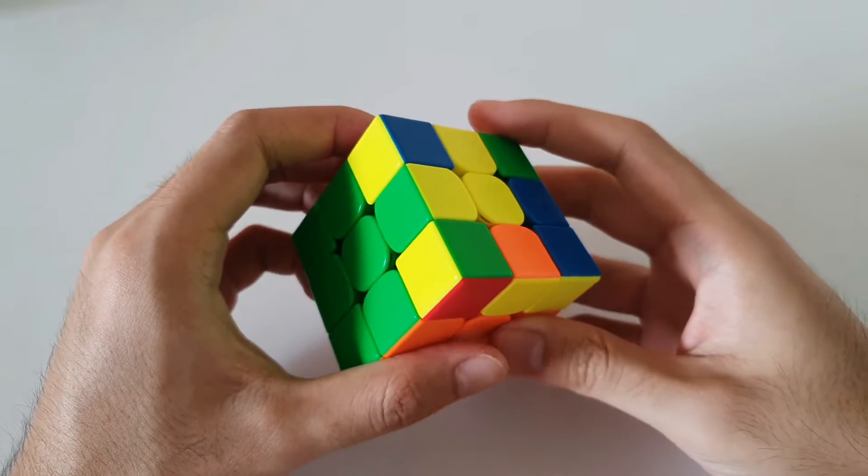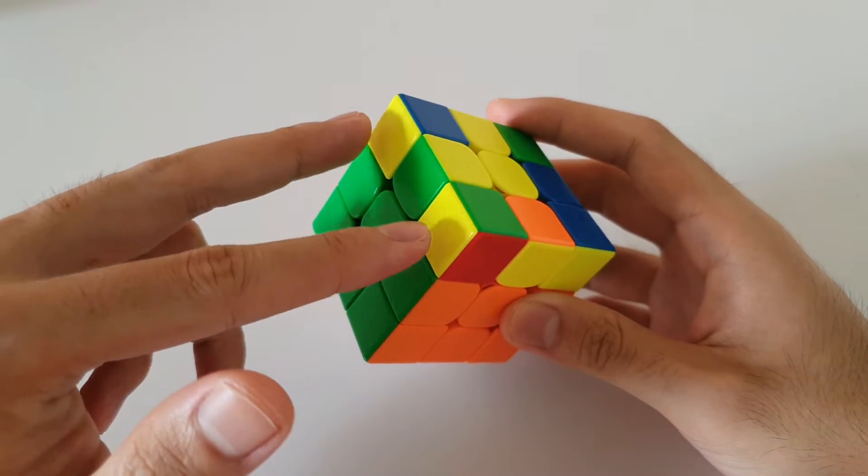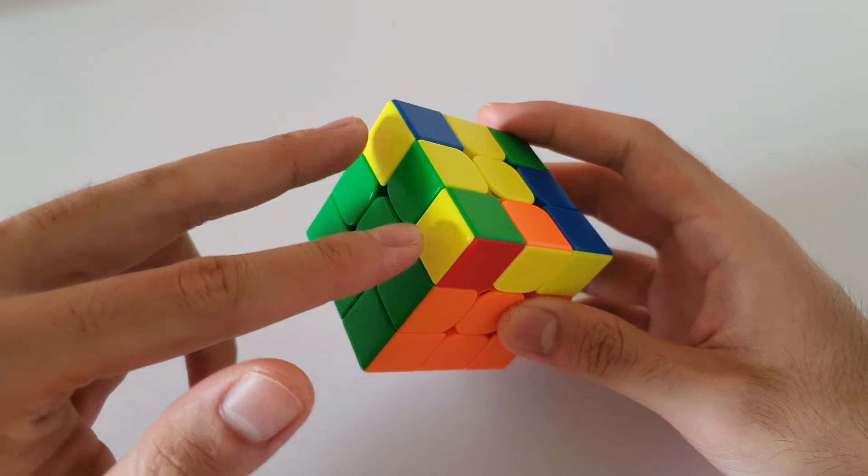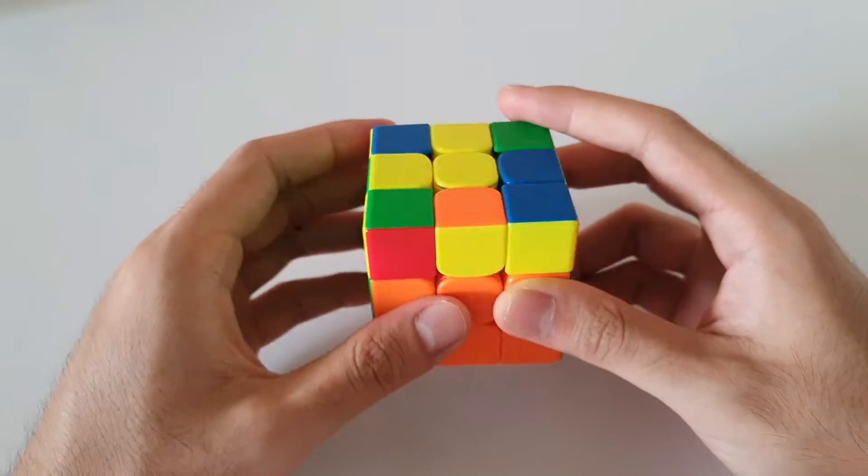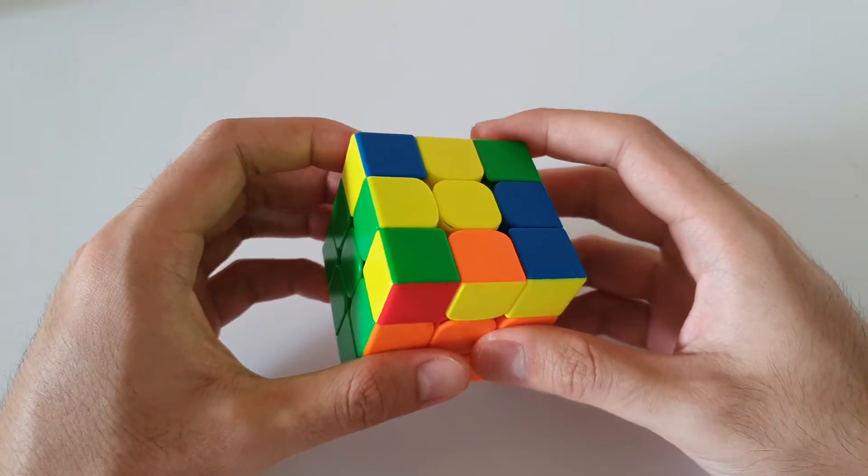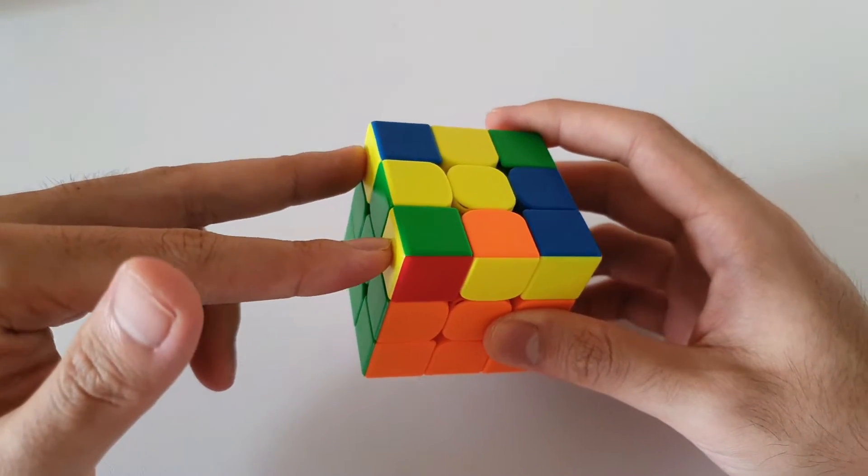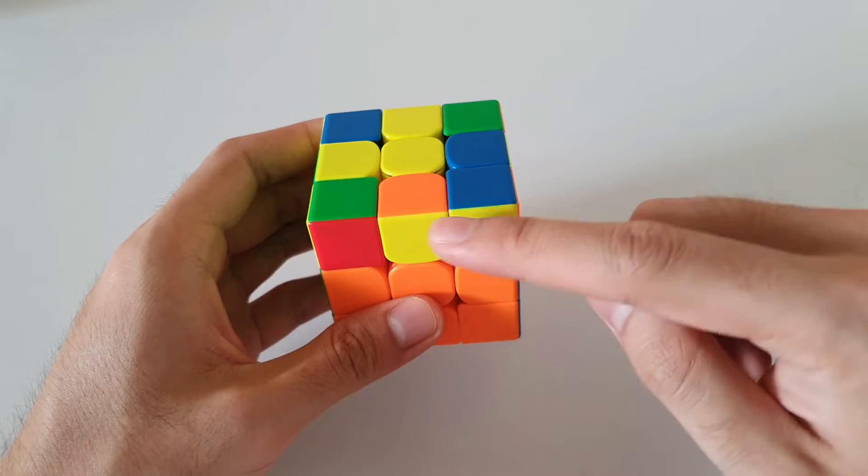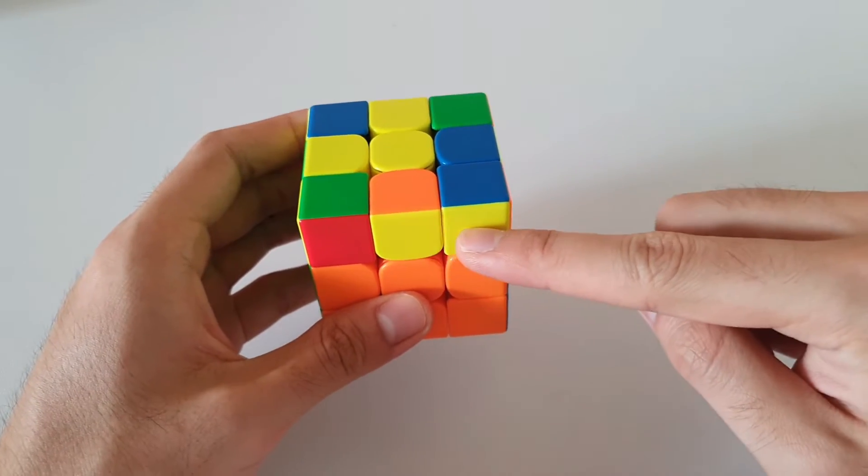So the first L shaped case is this one here. It's recognized by the matching corner colors here, otherwise known as headlights. And we also have a 2x1 bar. With this particular case, we want to hold the headlight so that it's pointing to the left and the 2x1 bar at the front.